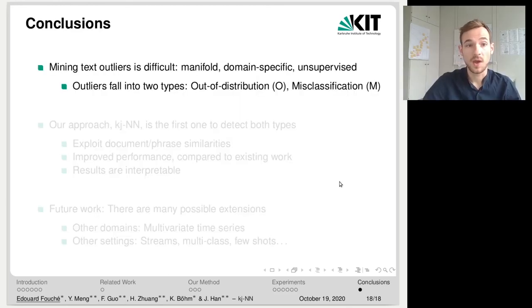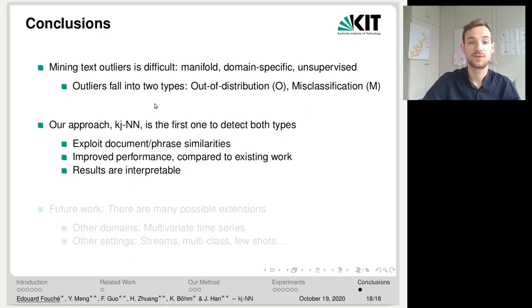In conclusion, we have seen that mining text outliers is difficult because outliers are manifold, domain-specific, and that the problem is fundamentally unsupervised. The outliers fall into two types, out of distribution and misclassification. Our approach, the kj nearest neighbor, is the first one to detect both types simultaneously, and it does so by exploiting document-to-phrase similarities. We have shown that it leads to improved performance, in particular compared to the existing work, and that our results are interpretable.